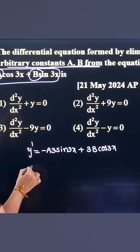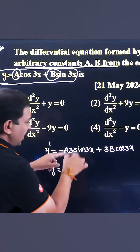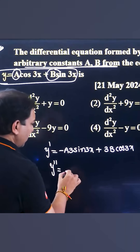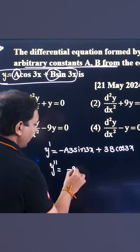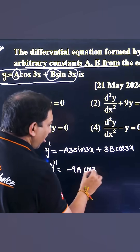First time done. Second time: y double dash equals — sin 3x minus 3 cos 3x minus 9a cos 3x.